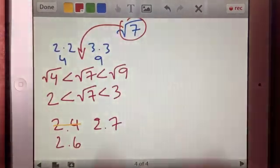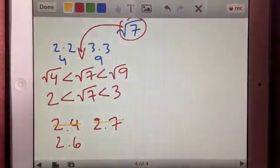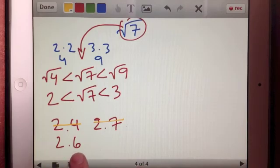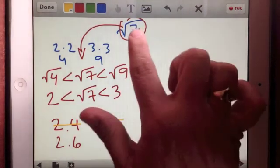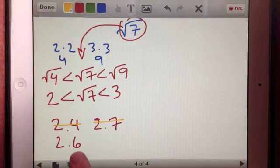So that means that if I am only to stay with tenths, then 2.6 is the most accurate representation for square root of 7. It's still not the exact value, but it's pretty accurate. It is accurate if I stay with just tenths.